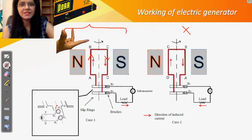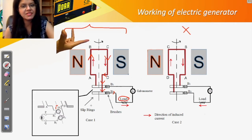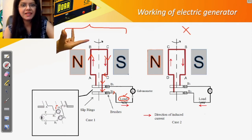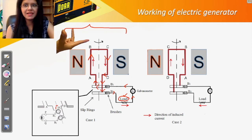The current flowing in side A-B is in this direction, and the current flowing in side C-D is in this direction. Let us complete the direction of the flow of current in the entire circuit. Current comes all the way — follow the arrows. The load can be an electric bulb, a heater, a geyser, a refrigerator — any electrical equipment. The current flows all the way and enters slip ring one, then enters side A-B of the rectangular coil.